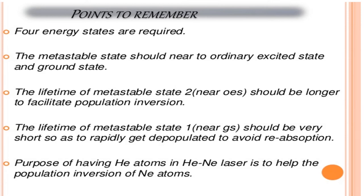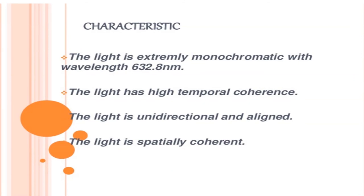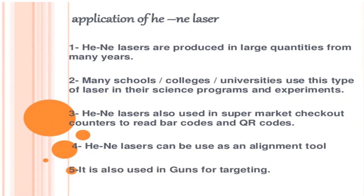A comparison of 3-level and 4-level laser energy diagrams is shown — the first represents the 3-level energy diagram and the second represents the 4-level laser energy diagram. The characteristics of the helium neon laser are: the light is extremely monochromatic with a wavelength of 632.8 nanometers; the light has high temporal coherence; the light is unidirectional and aligned; and the light is spatially coherent.